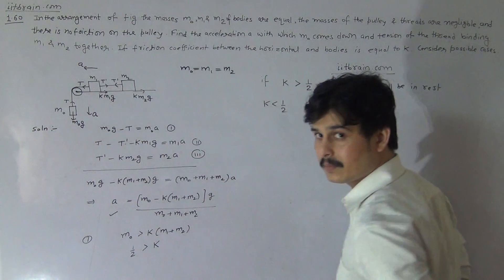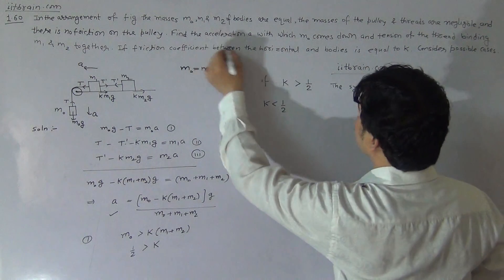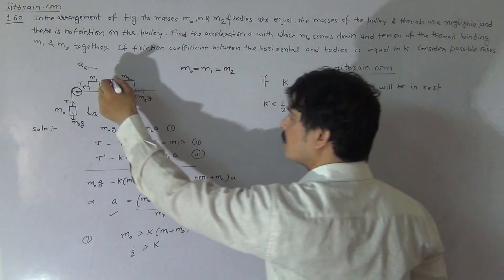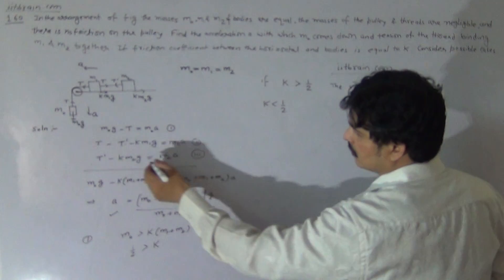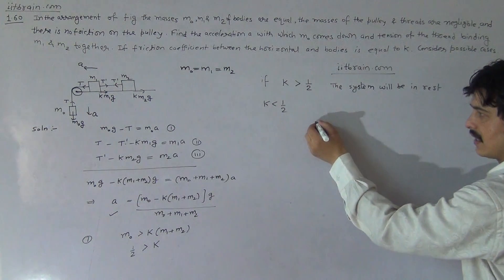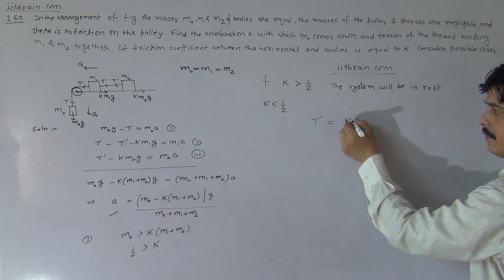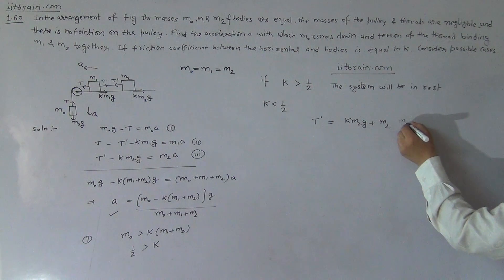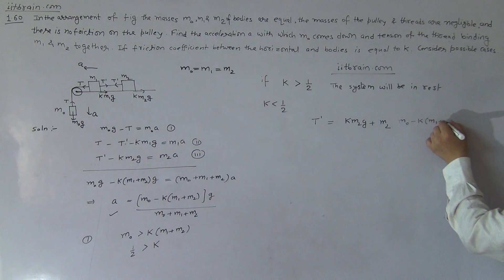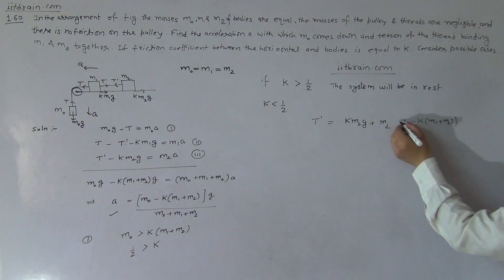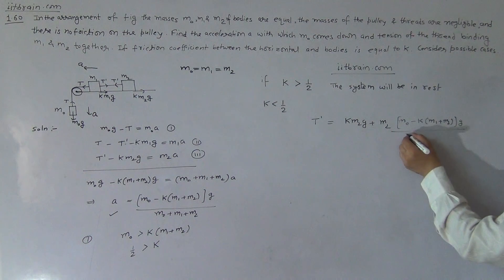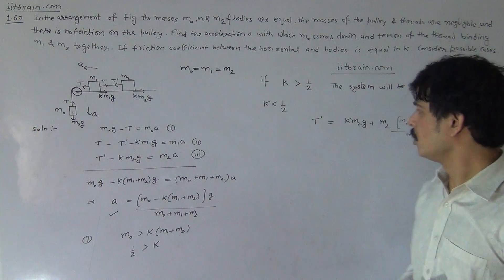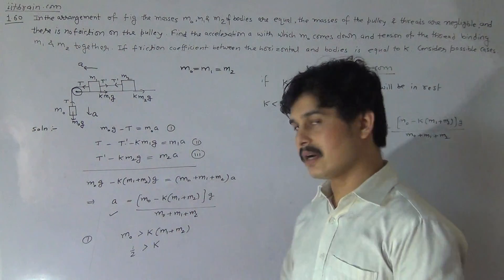The second part of the question asks for the tension T' in the thread binding M1 and M2 together. The third equation is the best one for getting the value of T'. So T' equals KM2g plus M2 times acceleration A, where A is [M0 minus K(M1 plus M2)] times g divided by (M0 plus M1 plus M2). Solving this expression will give the tension T'.